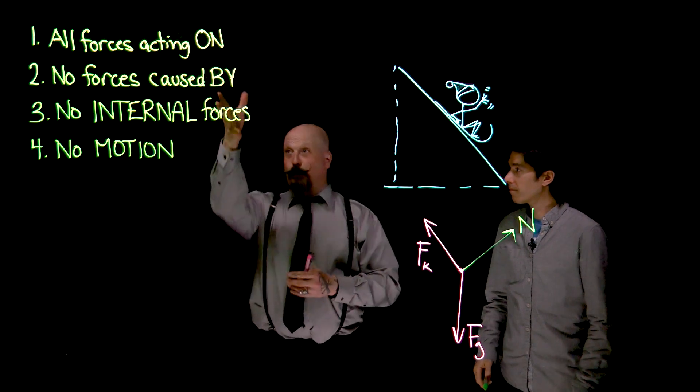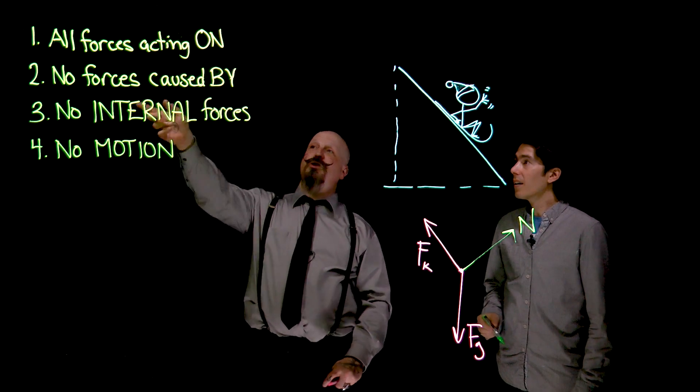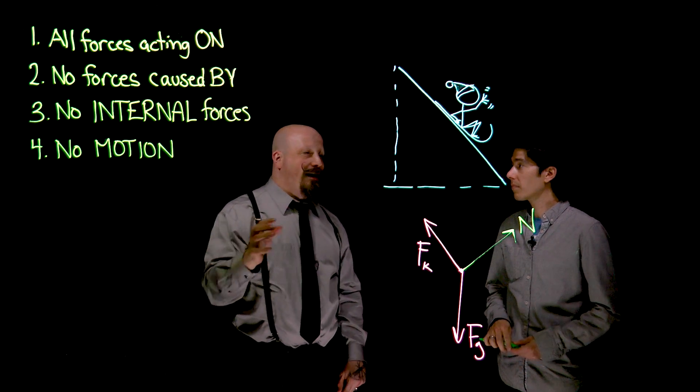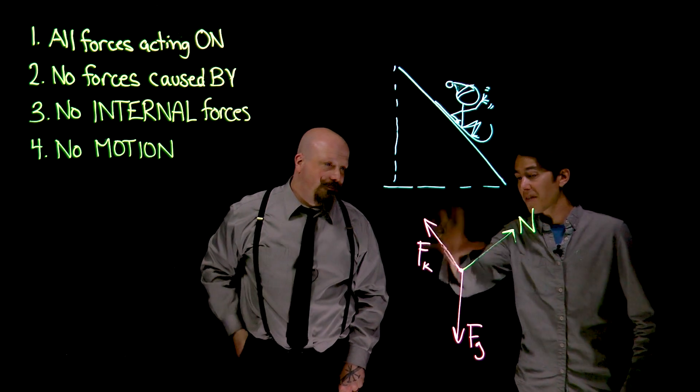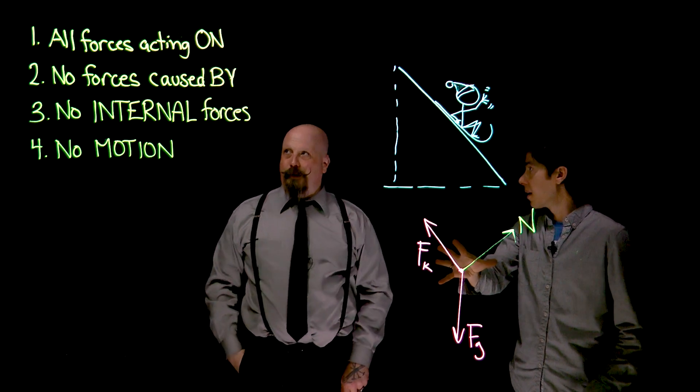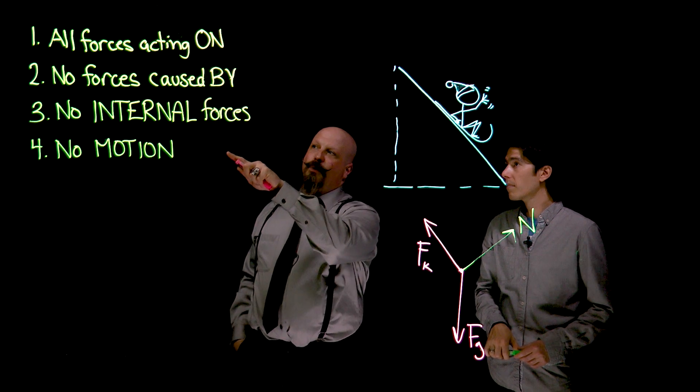Now, we have these rules here for free body diagrams. And how do those relate? The first one is we only draw the forces that are acting on our object. So, we have to make sure we include everything. Then what's the difference between the first and the second rule?